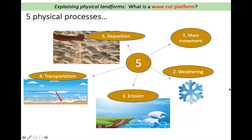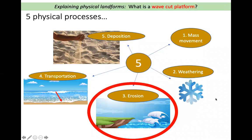Before we begin we need to remind ourselves that there are five physical processes. Physical processes are anything that changes the look or shape of the landscape — in this case the coastal area. The physical process that we need to concentrate on today is erosion.